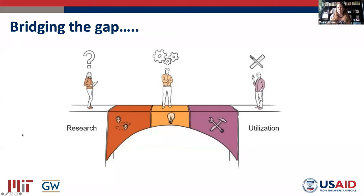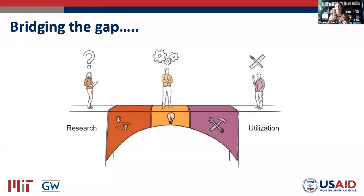When we say bring them together, what exactly do we mean? The question is how do we take some of the information, the research, the evidence, the data that our projects can generate — whether we generate that through our project or it's already existing data — and really bridge the gap towards its utilization? How do we connect that and make it approachable and understandable for decision makers within USAID or other donor organizations, government policy makers, local organizations, local governments — all different kinds of players?